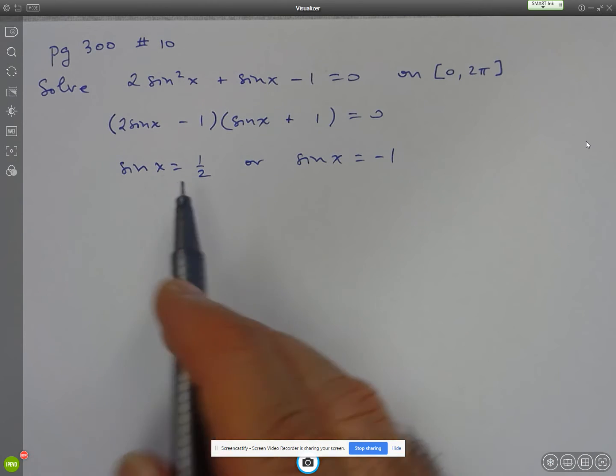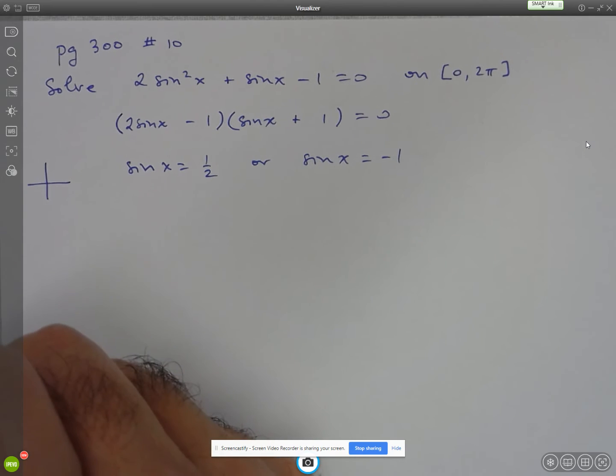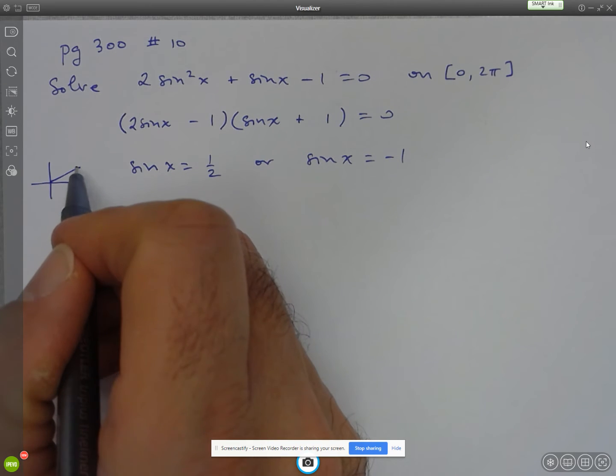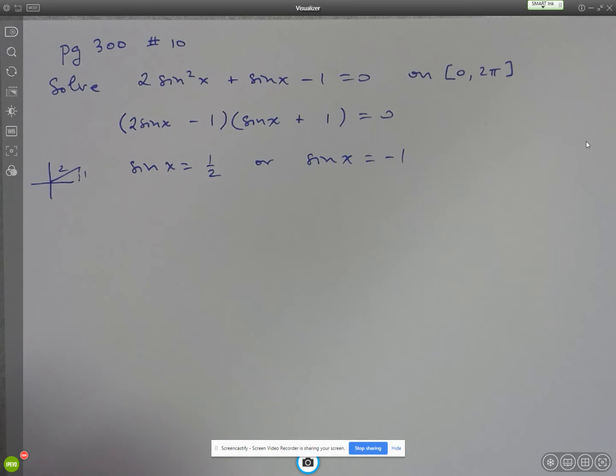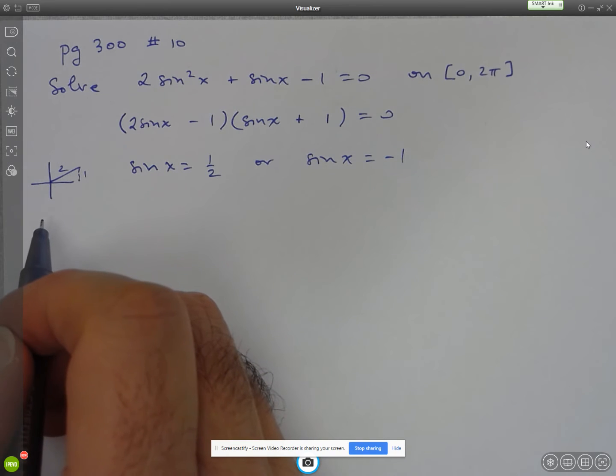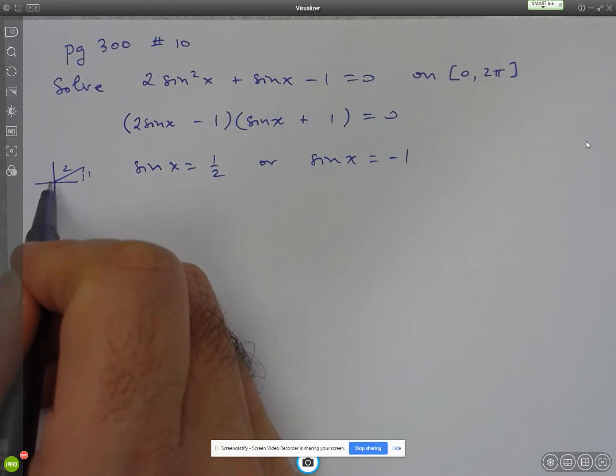So to solve the first one, what angle gives me a sine value of 1 half? Well, that's just going to be pi over 6 because y value of 1, r value of 2 is pi over 6. And, of course, instead of using the related angle identity, I'm just going to use my knowledge of special angles